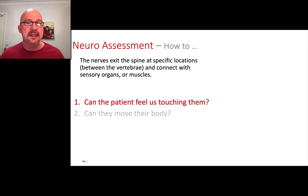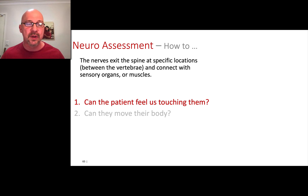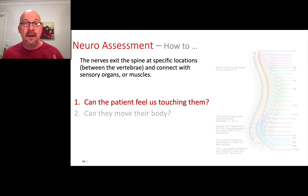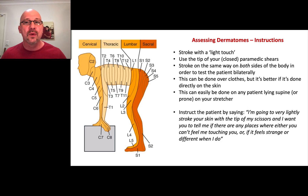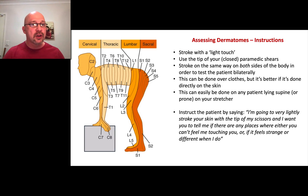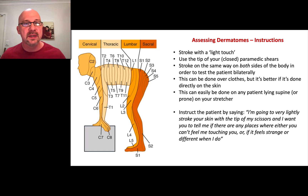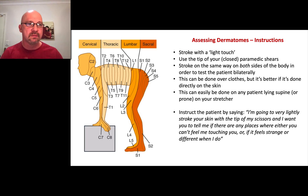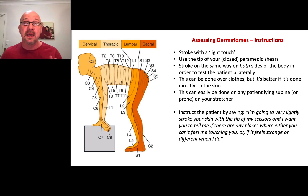The nerves come out and go into sensory organs. The question we're asking is: can the patient feel us touching them? We want to test at all the nerves that go out through the body. These are called the dermatomes — derm meaning skin — the areas of the body that we can touch. We start at C2; there's no C1. So C2 to C6, then T1 down to T12, then L1 to L5, and S1 to S5: cervical, thoracic, lumbar, and sacral.